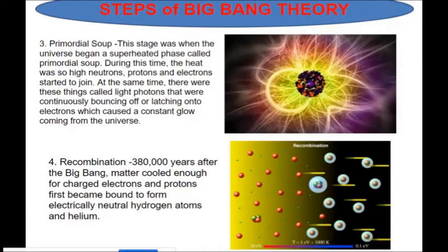And then, the fourth one is the recombination. So, recombination, 380,000 years after the Big Bang, matter cooled enough for a charged electron and proton, the first became bound to form the electrical neutral hydrogen atom and helium.